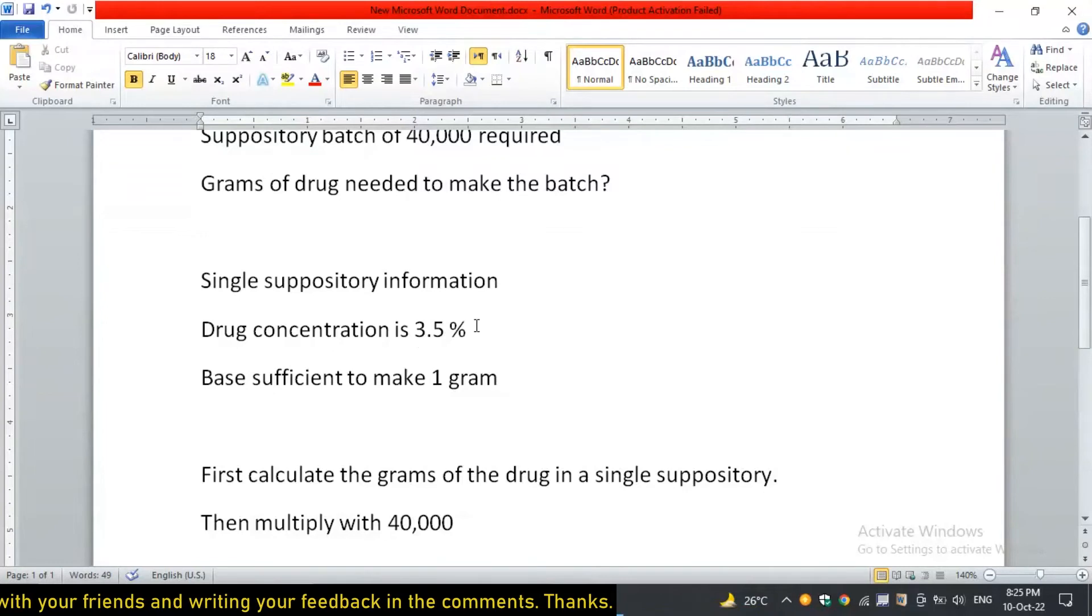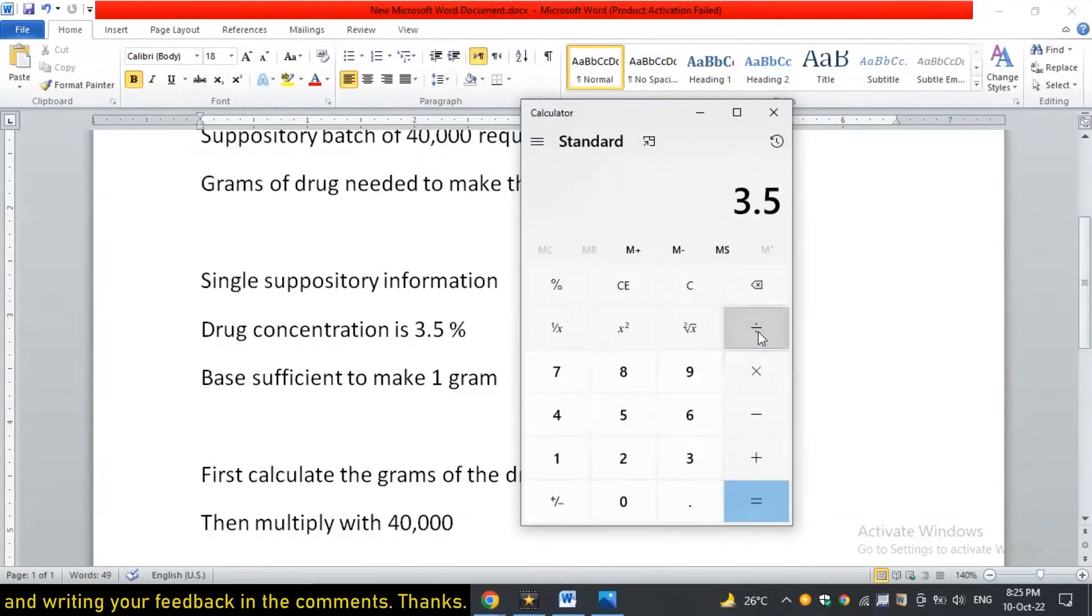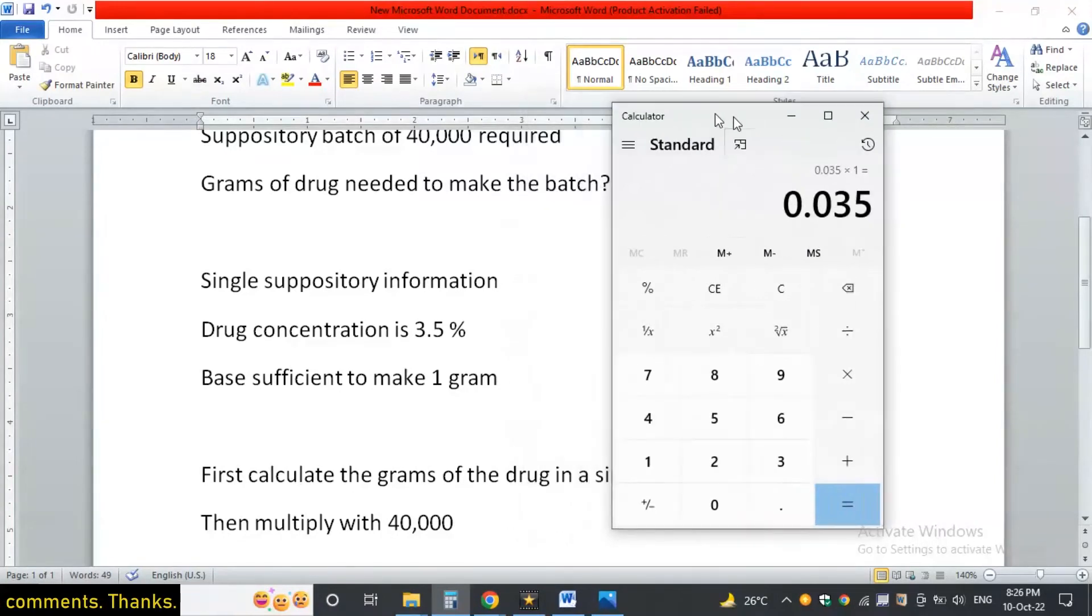So we will multiply this 3.5% with one gram. That is 3.5 divided by 100 multiplied by one. So these many grams of the drug are there in a single suppository formulation. So how much will be there in 40,000?